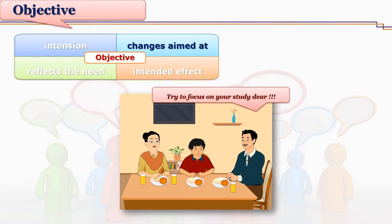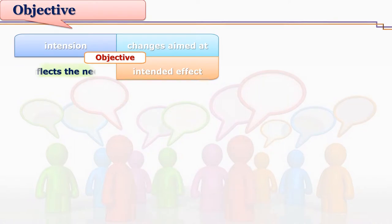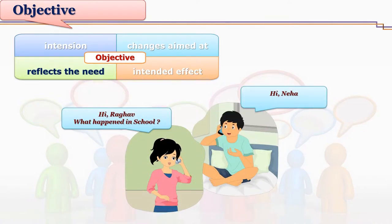Sometimes we aim at some changes in the other person. Raga's exams are approaching and his father wishes to make him realize this and focus on studies, so he initiates discussion over dinner. The father aims at some changes in Raga — he wants Raga to study hard instead of discussing about picnic, to focus more on studies. This is why Raga's father initiates discussion over dinner.